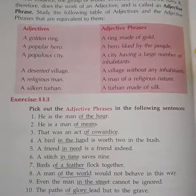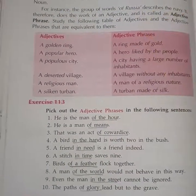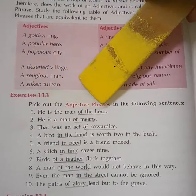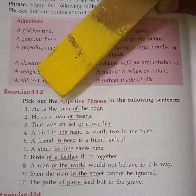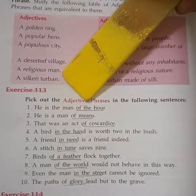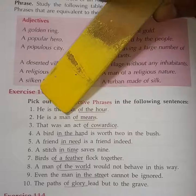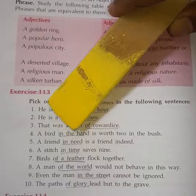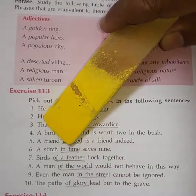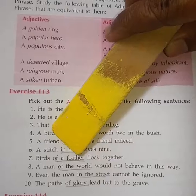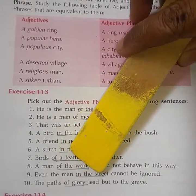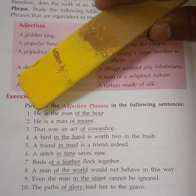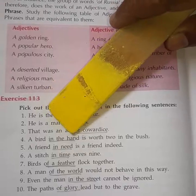We will do the exercise in the next class. Let us continue with Exercise 113. You just have to pick out the adjective phrase. The answers: 'He is the man of honor' — 'of honor.' Second: 'of cowardice.' Number 4: 'in the hand.' 'In need.' 'In time.' 'Of a feather.' 'Of the world.' 'In the street.' 'Of glory.' These phrases generally qualify the noun or the pronoun, so they are adjective phrases.